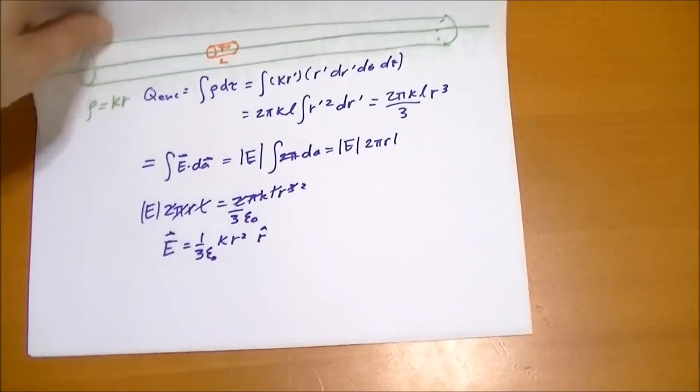So let's see how the pillbox would look in example 3 here. So an infinite plane carries a uniform surface charge sigma, find its electric field.